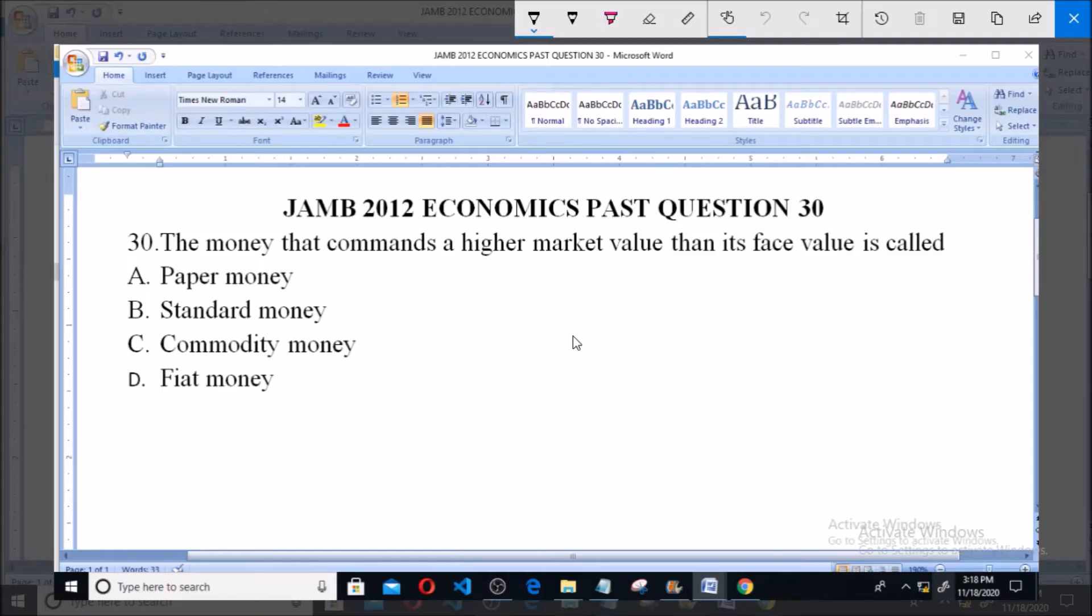JAMB 2012 Economics past question, Question 30: The money that commands a higher market value than its face value is called? Option A says paper money, B is standard money, C is commodity money, D is fiat money.